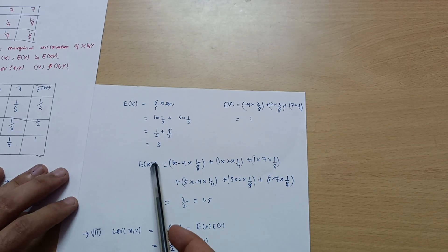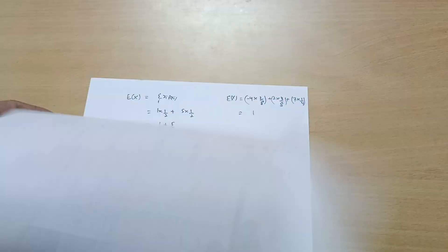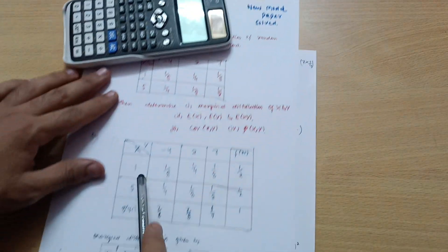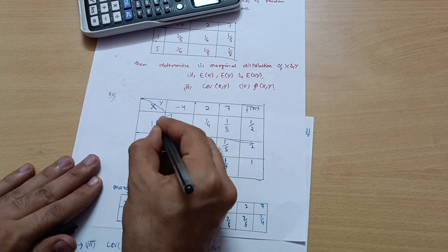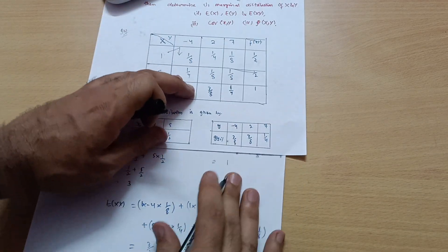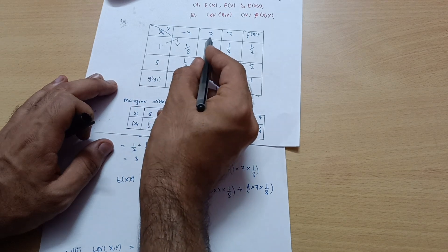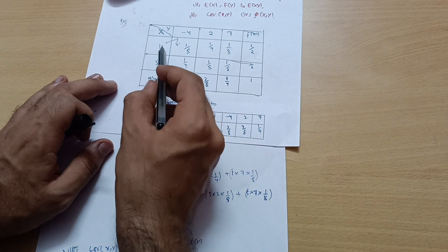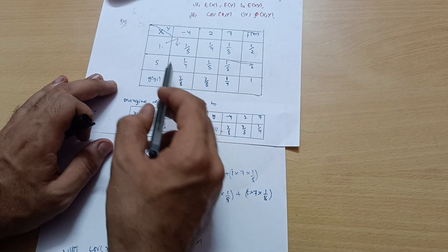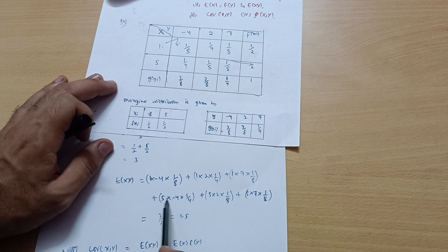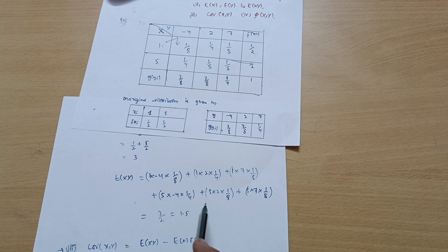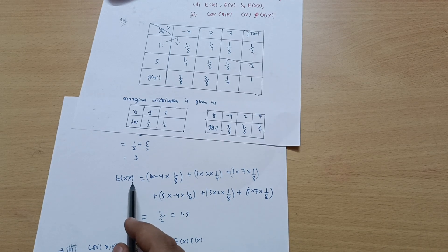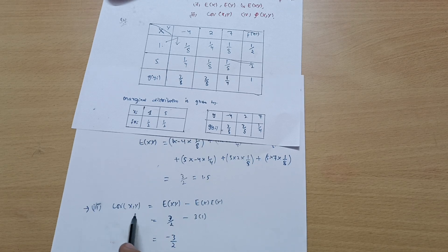Next, we calculate E(XY) = Σ Σ xᵢ yⱼ · P(xᵢ, yⱼ). The terms are: 1×(-4)×1/8 + 1×2×1/4 + 1×7×1/8 + 5×(-4)×1/4 + 5×2×1/8 + 5×7×1/8. When we compute all these terms, we get E(XY) = 1.5.